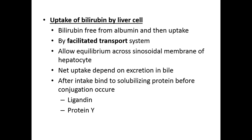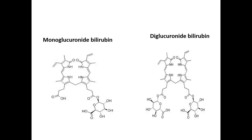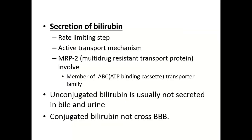We have already discussed which proteins are required for uptake, conjugation, and excretion. Uptake occurs by facilitated diffusion. Secretion is an active transport mechanism. For conjugation, the enzyme required is UGT — UDP-glucuronosyltransferase enzyme — which helps in making bilirubin soluble, converting it to conjugated bilirubin.